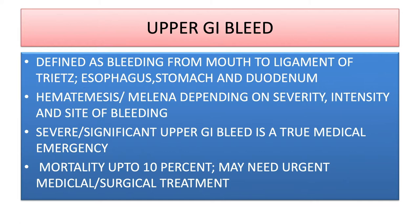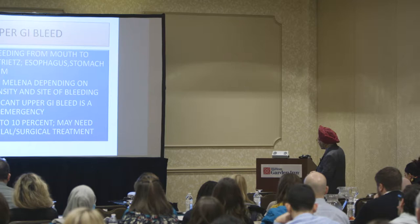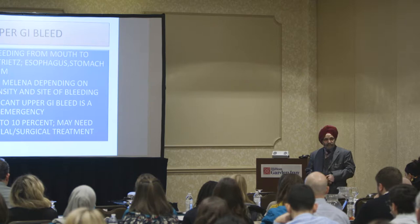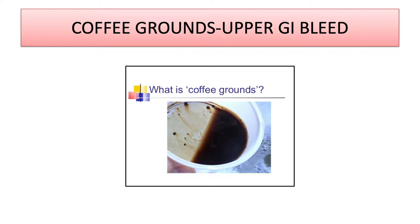Upper GI bleed is defined as bleeding from the mouth to the ligament of Treitz. It can come from the esophagus, stomach, or duodenum. It can present as hematemesis — vomiting blood — or erector bleeding in the form of melena or mahogany-colored stools, depending on the severity, intensity, and site of bleeding. The more severe and faster the bleeding, the brighter red the blood; slow bleeding produces melena or dark stools. Severe upper GI bleed is a true medical emergency with mortality up to 10%, and may need urgent medical and surgical treatment. This coffee-ground material you see in books really does look like coffee grounds — I wouldn't know personally because I don't drink coffee, even after 50 years here. I still drink my Darjeeling tea.